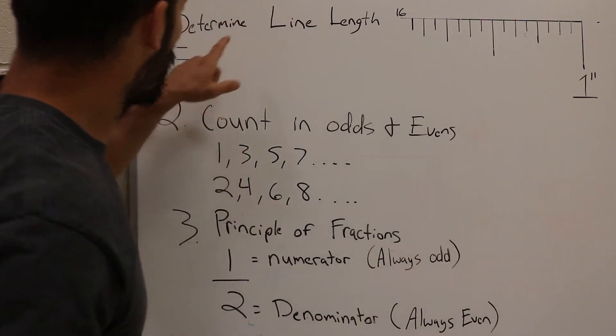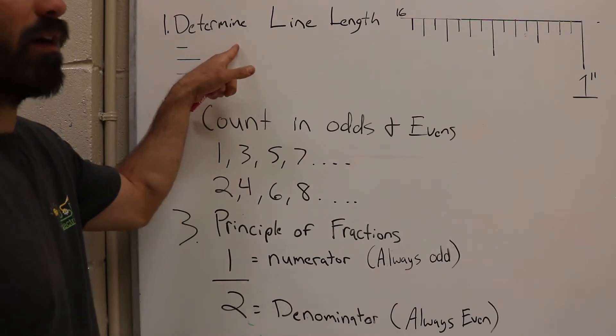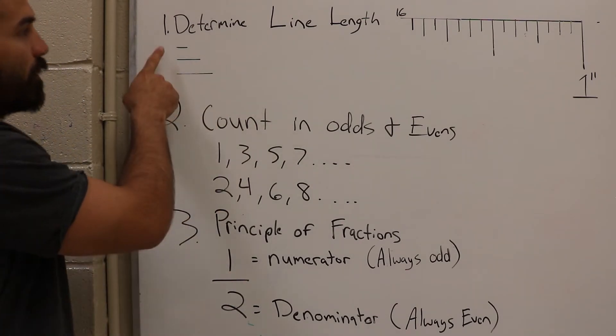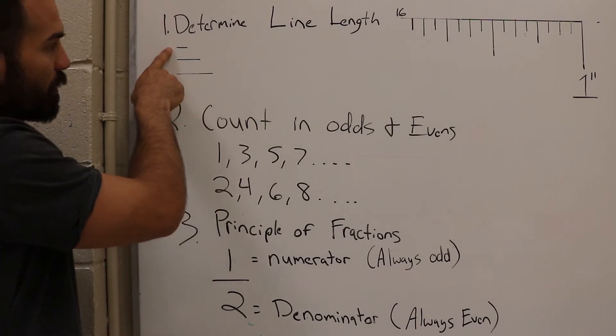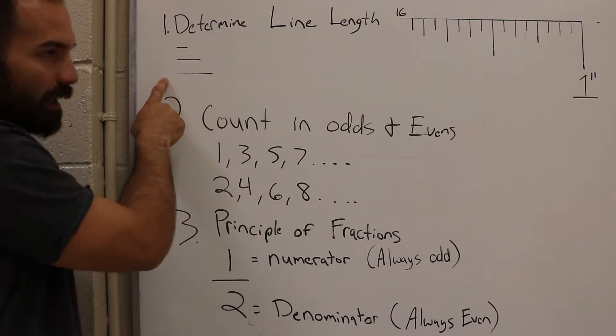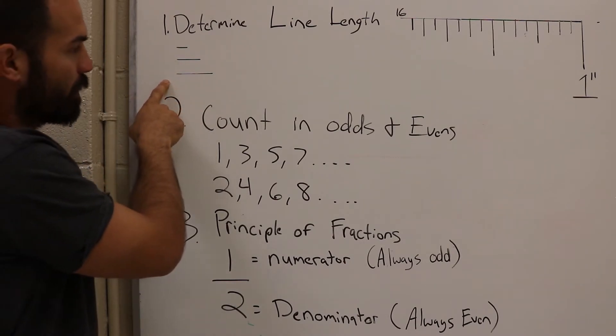First, you've got to know three things. Number one, you've got to be able to determine the line length. If you can tell me that this line is shorter than this line and this line is shorter than that line, then you're 33% of the way there.